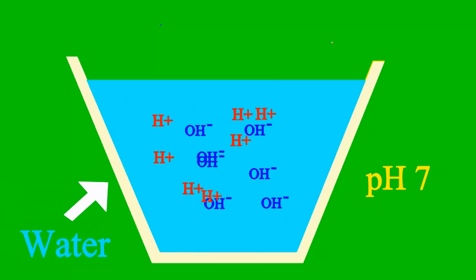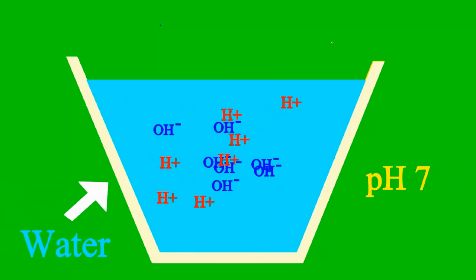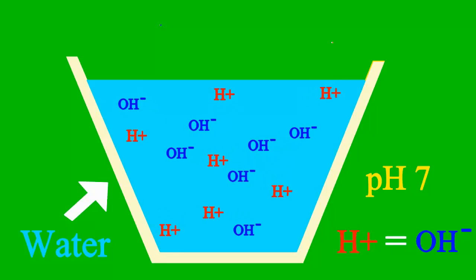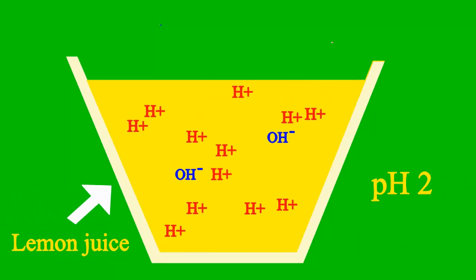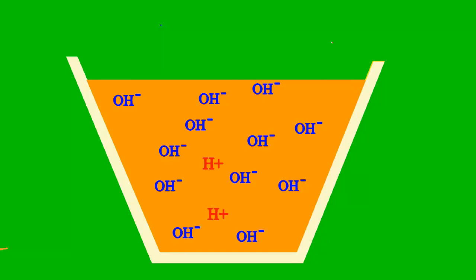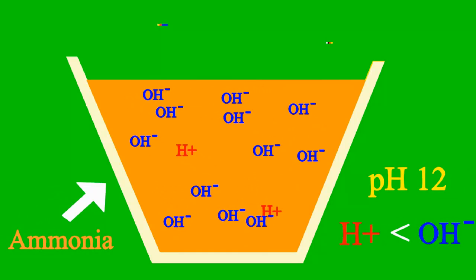When the pH is 7, then it's a case where the sample is neither an acid nor base. But less than 7, it's an acid we say, more than 7, it's a base all the way.